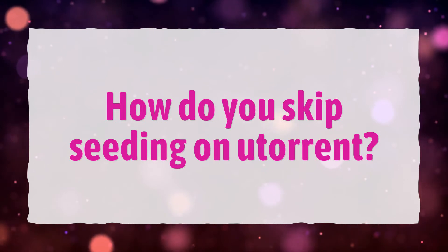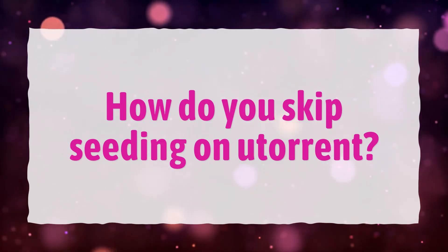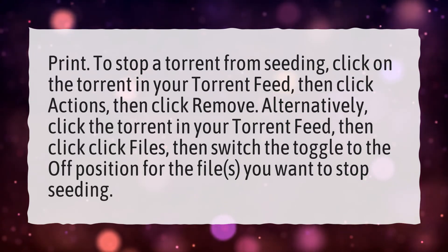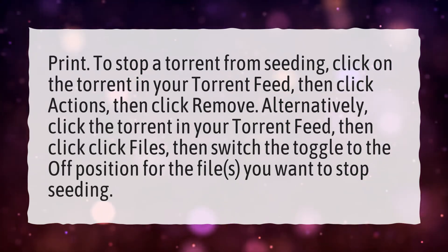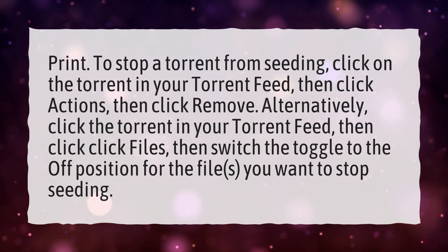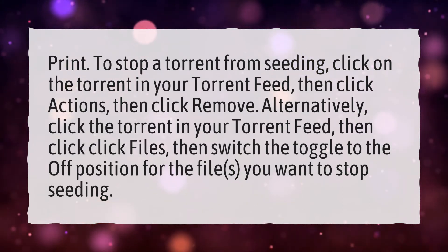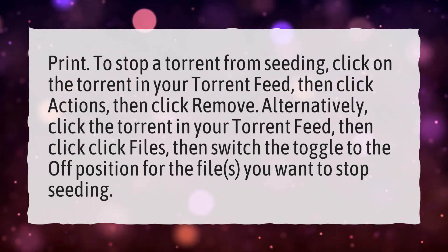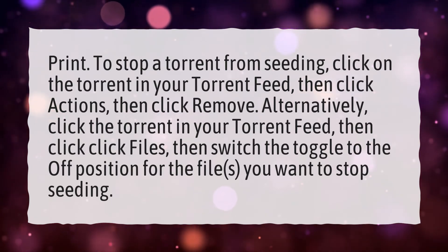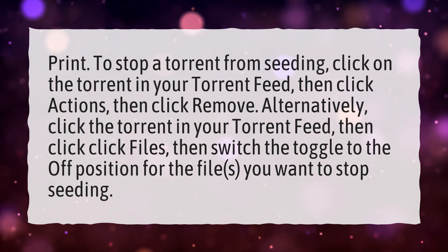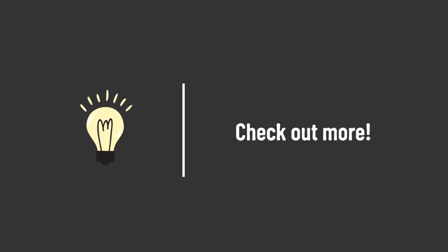How do you skip seeding on uTorrent? To stop a torrent from seeding, click on the torrent in your torrent feed, then click Actions, then click Remove. Alternatively, click the torrent in your torrent feed, then click Files, then switch the toggle to the off position for the files you want to stop seeding.